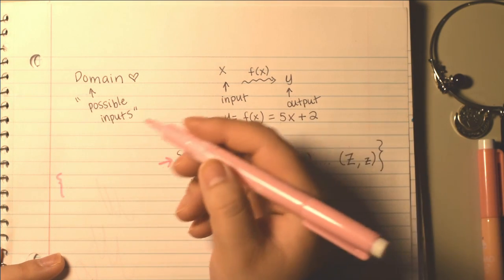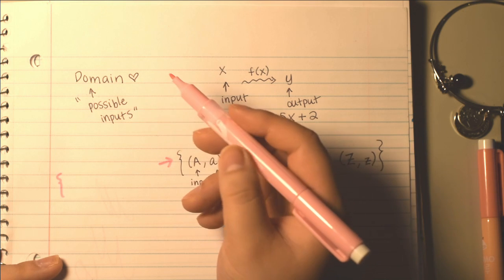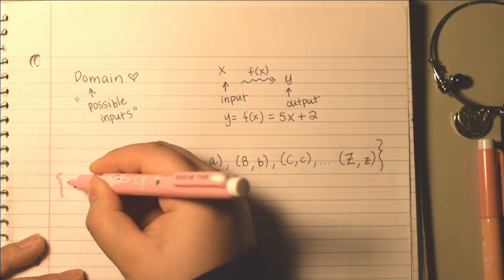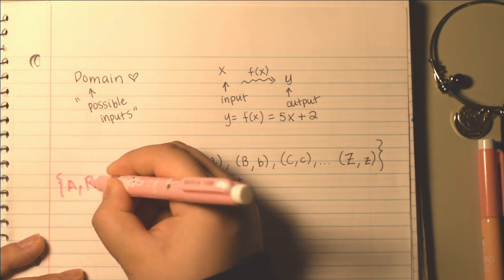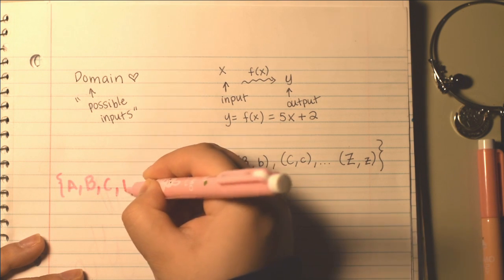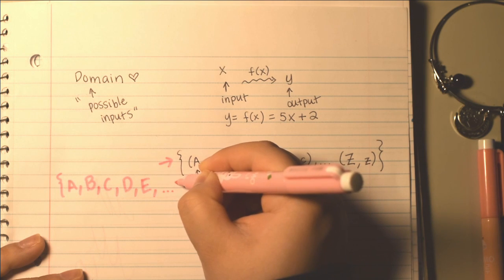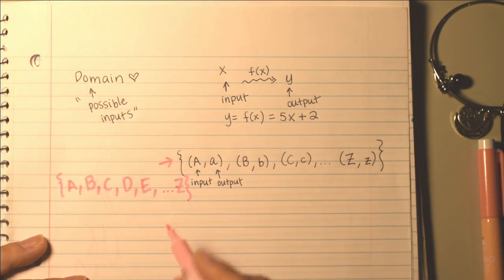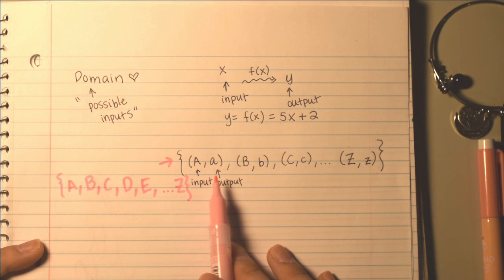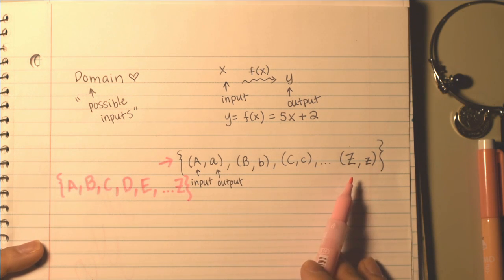So in both cases here, we can find the domain. For the finite cases, it's actually much easier because we're talking about possible inputs. So the domain is your set of possible inputs, which would look like A, B, C, D, E, to Z. That is your domain for this finite situation.